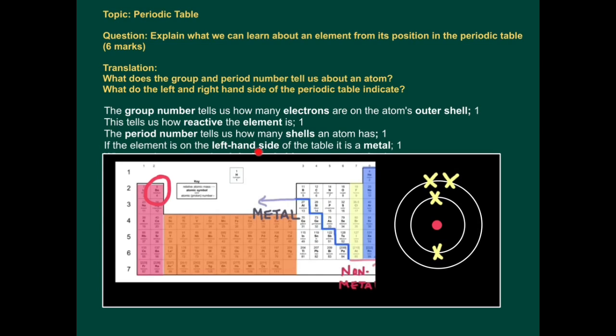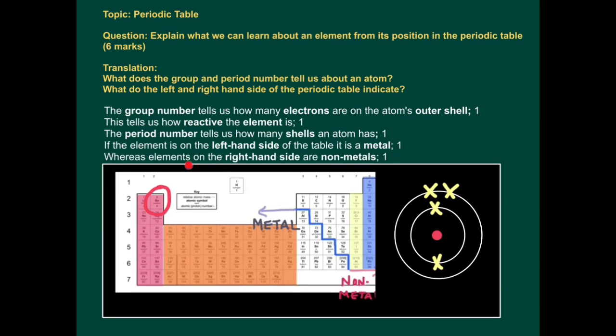If the element is on the left hand side of the table, it is a metal. Remember, this is the dividing line. Everything on this side is a metal, everything on this side is a non-metal. Whereas elements on the right hand side are non-metals.